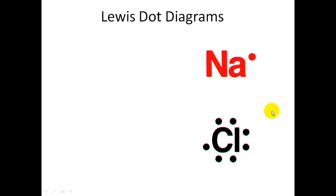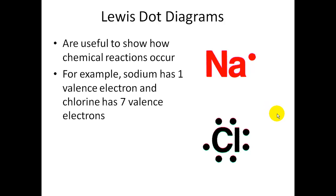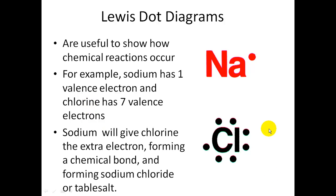All right, so sodium had one dot, and chlorine has seven dots. These Lewis dot diagrams are useful to show how chemical reactions occur. For example, sodium has one valence electron. Chlorine has seven valence electrons. Sodium would love to get rid of this. So sodium will give chlorine its electron forming a chemical bond and forming table salt.